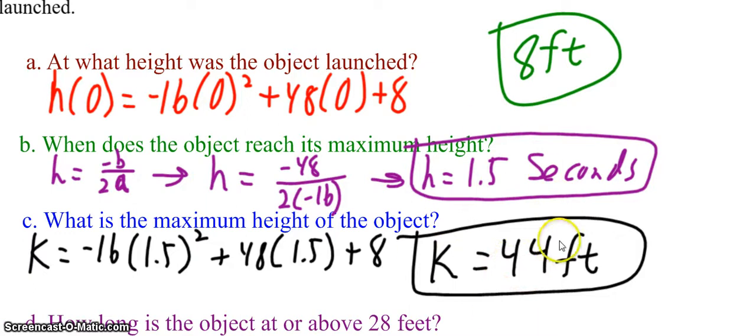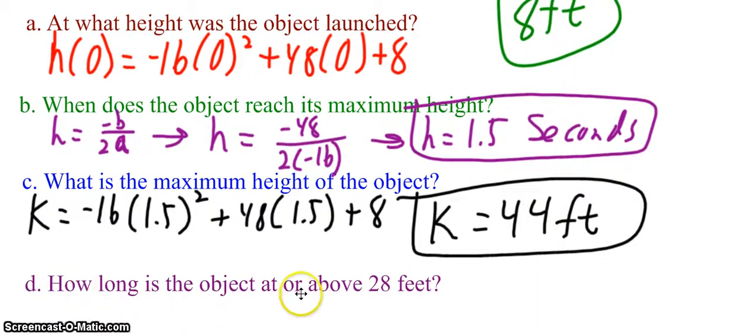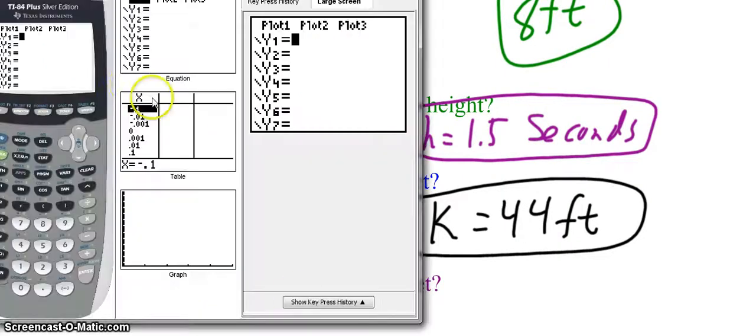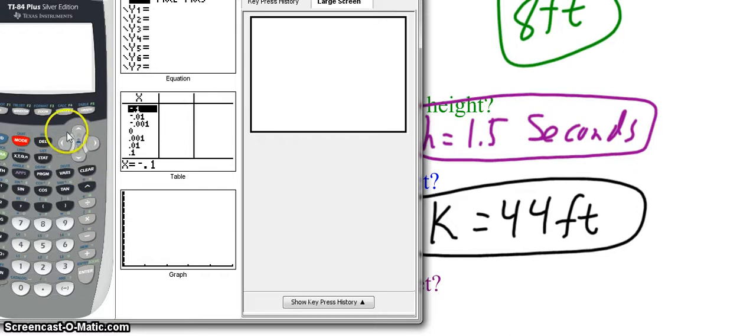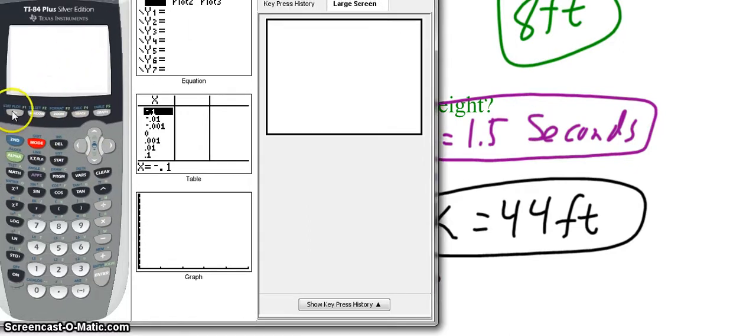Now, we're actually going to use a lot of this information to help us with the next part of the problem. So how long is the object at or above 28 feet? This is where we're going to need our calculator. So go ahead and get your calculator out. Here's my calculator. And we're going to put the function into y1.